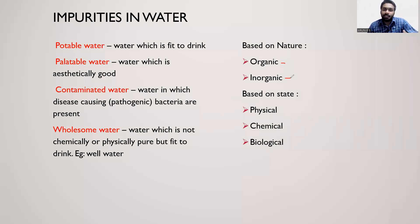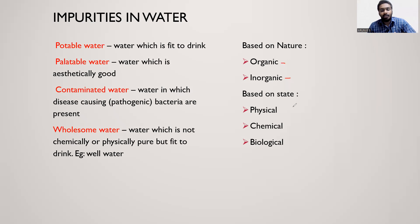Organic impurities are organic — biological matter is organic. Chemical materials are inorganic. Based on state, impurities can be dissolved or in a present state. Based on characteristics: physical, chemical, biological.